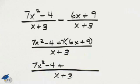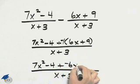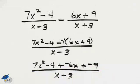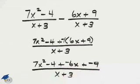Negative 1 times 6x is negative 6x plus negative 1 times 9 is negative 9. I can now combine like terms.